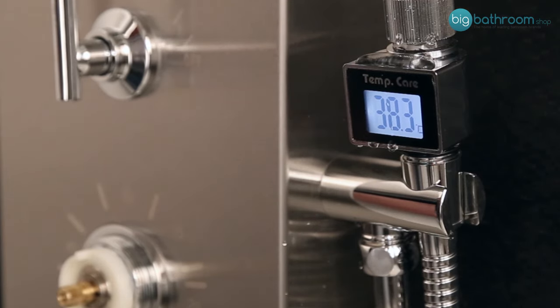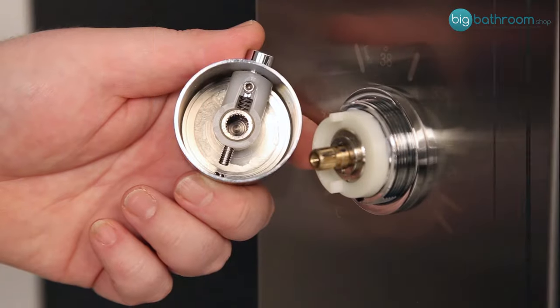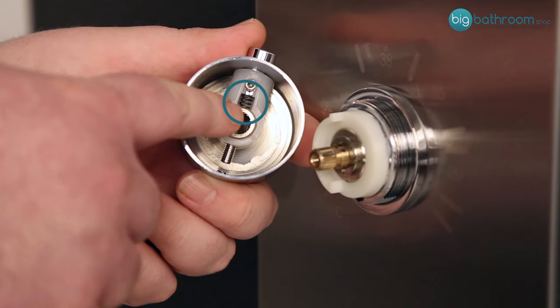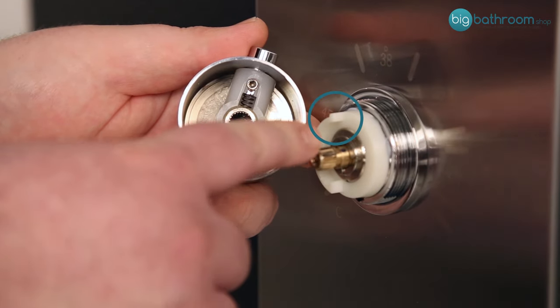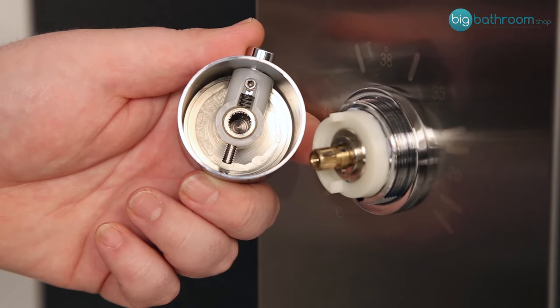Once you have your maximum temperature, turn off the shower completely and place the control handle back onto the spindle, ensuring that the lug of the handle fits into the lug on the control spindle. This disables you from turning the handle any further anti-clockwise without pressing the override button.